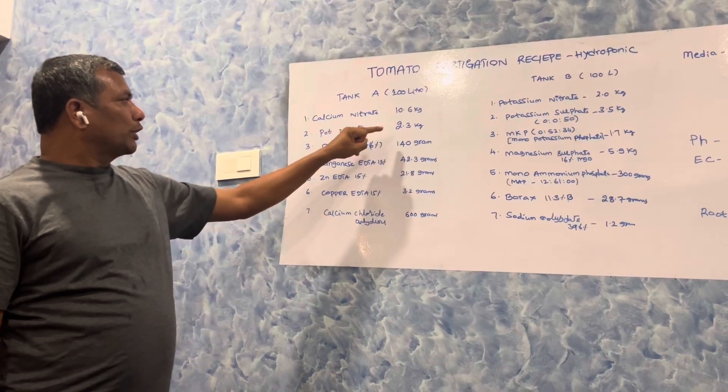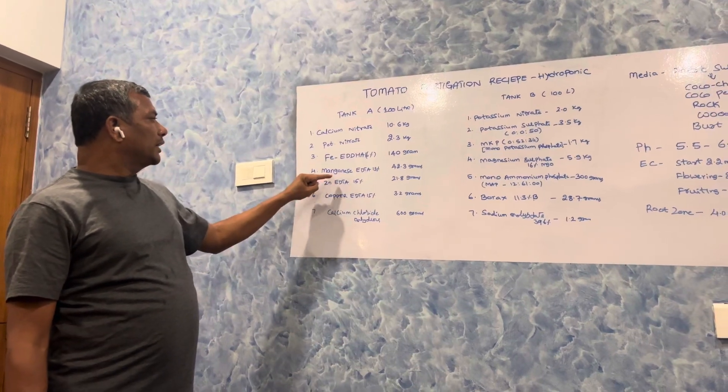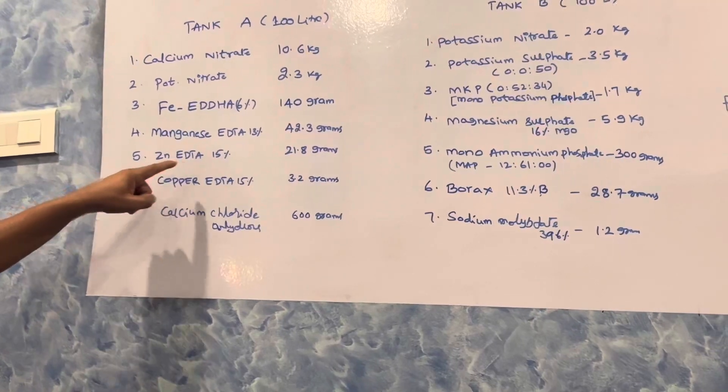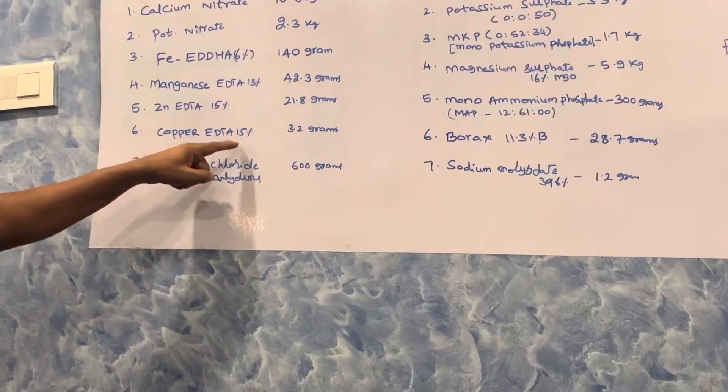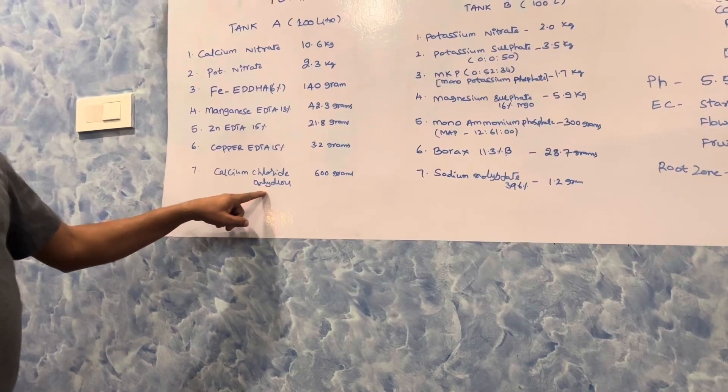Iron EDTA 6% 140 grams, manganese EDTA 13% 42.3 grams, zinc EDTA 15% 21.8 grams, copper EDTA 15% 3.2 grams, calcium chloride anhydrous solution 600 grams.